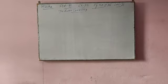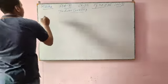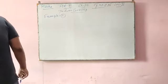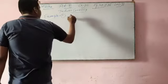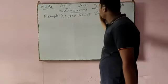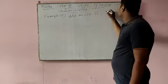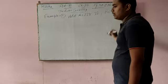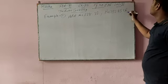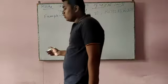Now come to example number 7. We have to add Rs. 128.32, Rs. 138.32, Rs. 712.85, and Rs. 26.9. So we have to add this way.